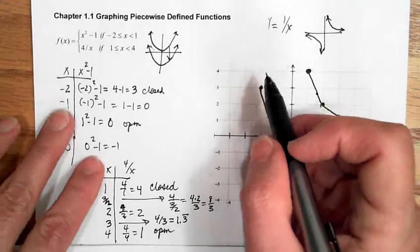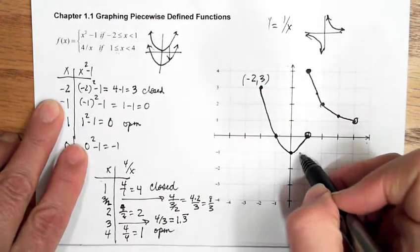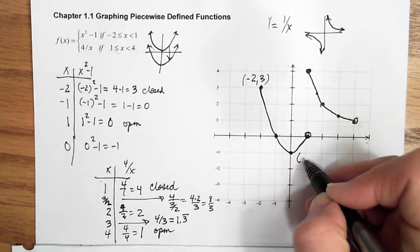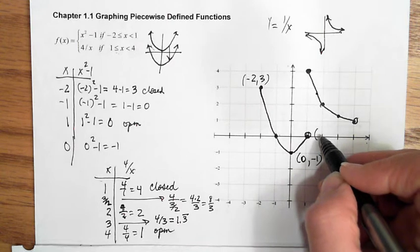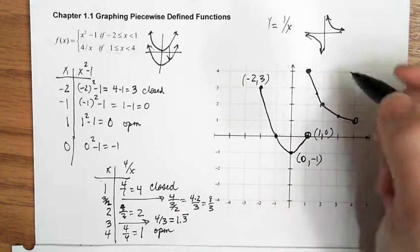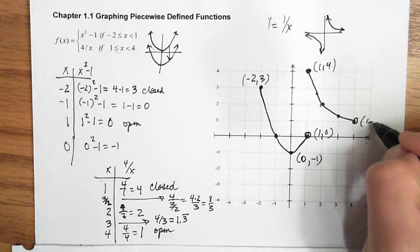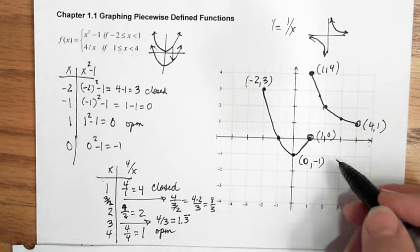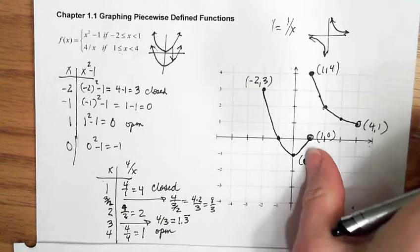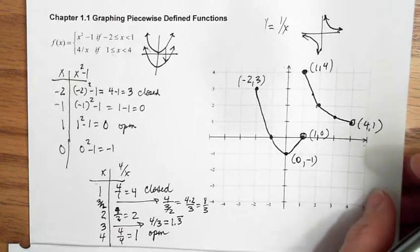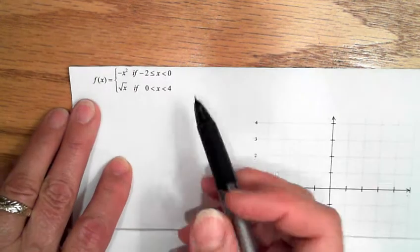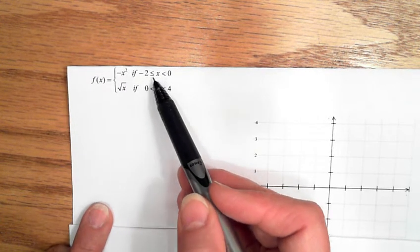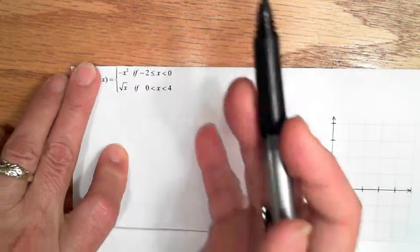To be complete, label the endpoints: (-2, 3), vertex at (0, -1), (1, 0) open, (1, 4) closed, and (4, 1) open. Clearly label your endpoints as open or closed so anyone looking will understand whether each is included. Now the second example continues this type of problem: f(x) = -x² from -2 to 0 and the square root of x — again, parts of parent functions we've looked at.